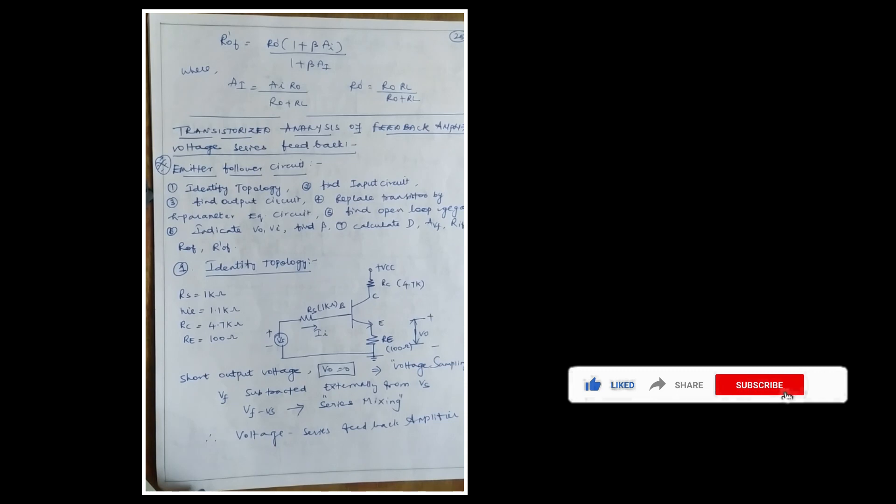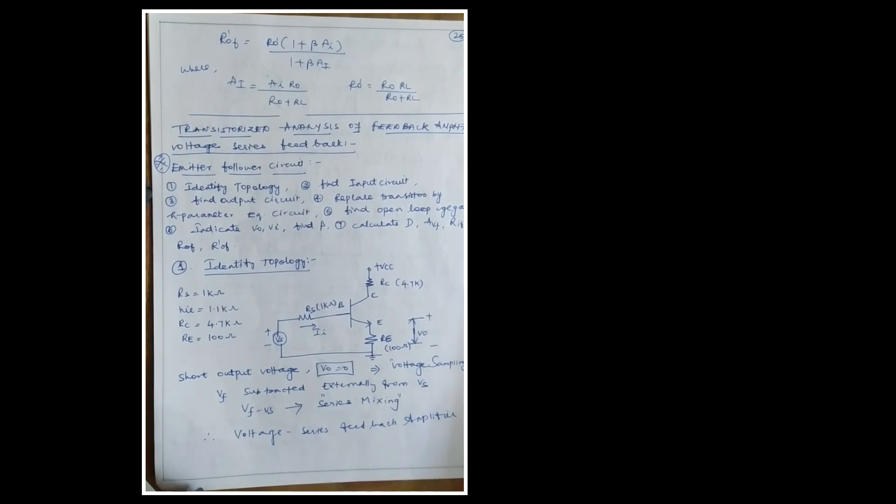For the voltage series feedback amplifier, there are six steps. First step: identify the topology. Second step: find the input circuit. Third step: find the output circuit. Fourth step: replace the transistor by the equivalent h-parameter circuit. Fifth step: find the open loop voltage gain. Sixth step: indicate V_out, V_i and find beta. Seventh step: calculate the desensitivity and voltage gain with feedback, input resistance R_if, output resistance R_of without connecting R_L, and R'_of with connecting R_L.